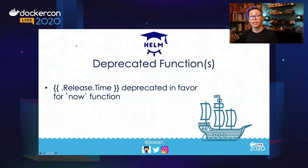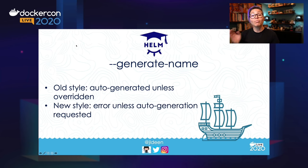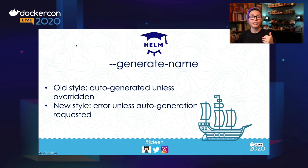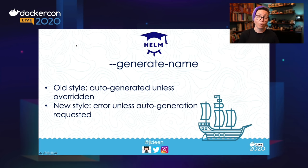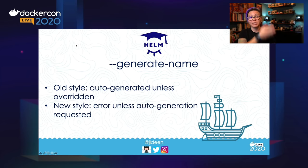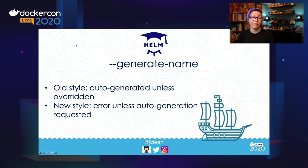The last breaking change is `--generate-name`. Previously in Helm 2, you didn't have to specify a name — you could do `helm install stable/jenkins` and Helm would suggest a fun name like 'dancing penguin' or 'fuzzy panda'. But because we're really trying to make Helm 3 focus on production use cases, you now have to give it a name. So if I want to deploy Jenkins, I would say `helm install jenkins stable/jenkins`. Or if I still wanted the old behavior, I could use the `--generate-name` flag. If I don't specify a name or use this flag, I will get an error.